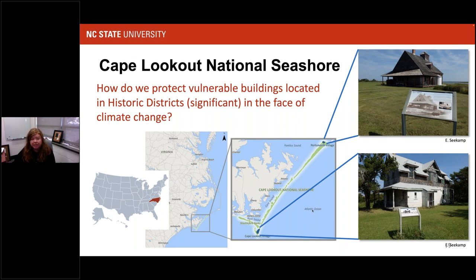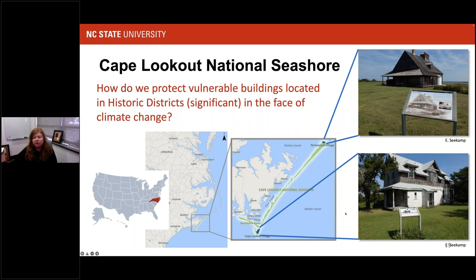There are two different historic villages: Portsmouth Village at the very north end and Cape Lookout Village at the very southern end of the seashore in Eastern North Carolina. The question we were charged with answering is: how do we protect vulnerable buildings located in these historic districts? They are listed on the National Register, therefore significant, in the face of climate change. These Outer Banks islands are very vulnerable to sea level rise, storm surge, flooding, and erosion. What happens if you have an entire district where all the buildings are significant and all are vulnerable — how do you make prioritization decisions?